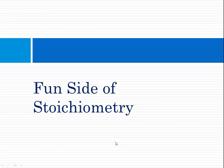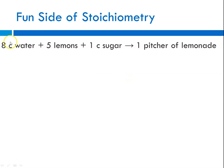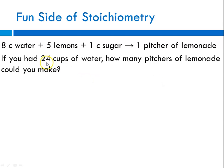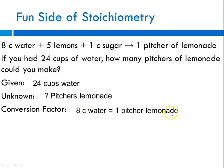We start with the fun side of stoichiometry — there's a worksheet in your packets with these problems. Given this recipe: 8 cups of water, 5 lemons, 1 cup of sugar, makes one pitcher of lemonade. If you had 24 cups of water, how many pitchers of lemonade could you make? We fall back on our problem-solving method. Given: 24 cups of water. Unknown: how many pitchers of lemonade?